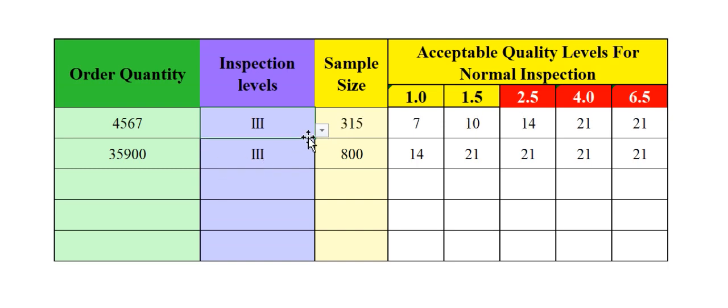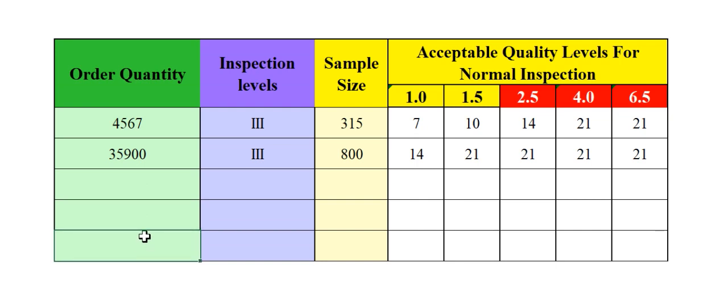Here you can find five rows at a time — you can get the result. Your ship quantity or order quantity, you just put your order quantity here, and select the inspection level, and you will get the sample size and the acceptable quality level automatically. No need to memorize anything. Within five seconds you know the sample size and acceptable quality level. This is the magic of this order quantity-based AQL table. Thanks for watching.